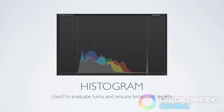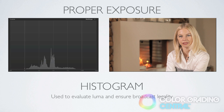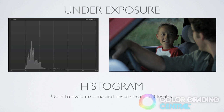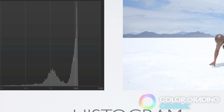Our next scope is the histogram. It's useful in evaluating exposure and particularly useful in ensuring broadcast legality — in other words, keeping the exposure within the limits safe for broadcast. We read the exposure from left to right with the shadows on the left, the midtones in the middle and the highlights on the right. The trace is calculated by the sum of the pixels added on top of each other at each exposure level. A properly exposed image shows a pretty even distribution of the trace across the histogram. An underexposed image has the trace collected to the left, while overexposure shows the trace gathered to the right — and anything exceeding 100 IRE is illegal or not safe for broadcast.